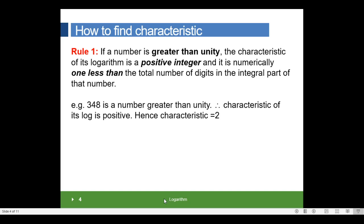Now let us see how to find the characteristics. Rule 1: if a number is greater than unity, the characteristic of its logarithm is a positive integer, and it is numerically 1 less than the total number of digits in the integer part of that number. 348 is a number greater than unity. Therefore, the characteristic of its log is positive, hence the characteristic is 2.